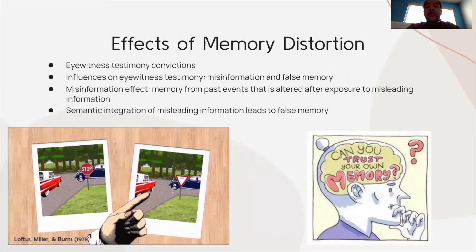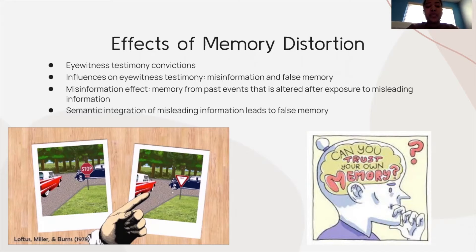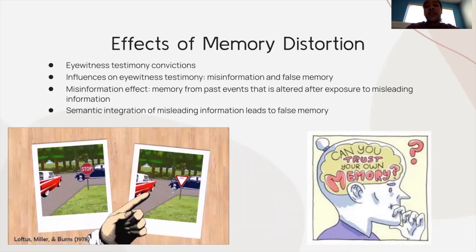The misinformation effect is memory from past events that is altered after exposure to misleading information. This misinformation can be introduced via leading questions asked by police or other people after an event has occurred, such as the example below where participants in a study were asked to choose between two pictures and decide which one they saw after receiving verbal misinformation. This information can then become part of the original memory through semantic integration, therefore creating a false memory.